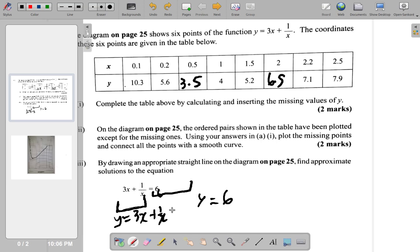Now, both lines, one of them will be straight, one of them curve. You've already plotted 3x plus 1 over x. Next, you're going to plot y is equal to 6.